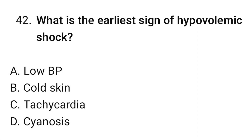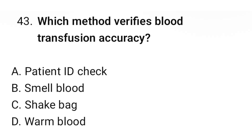Question number 42: What is the earliest sign of hypovolemic shock? The correct option is C: Tachycardia. Question number 43: Which method verifies blood transfusion accuracy? The correct option is A: Patient ID check.